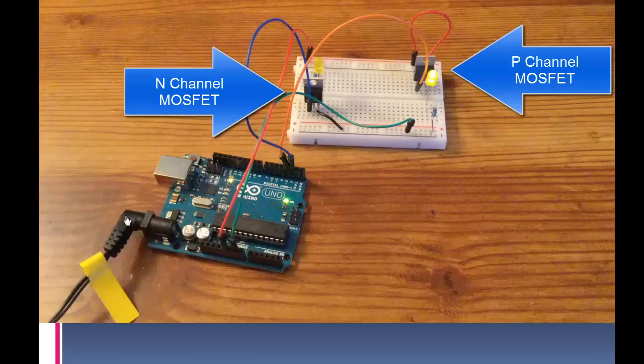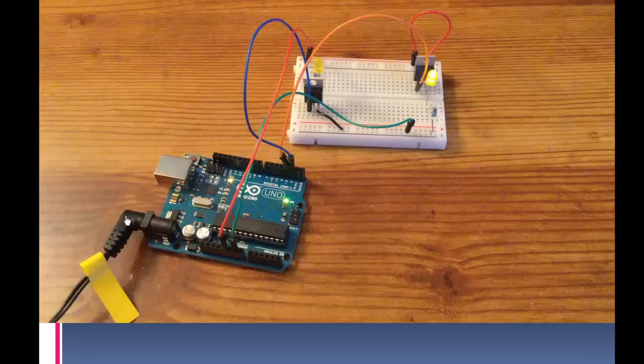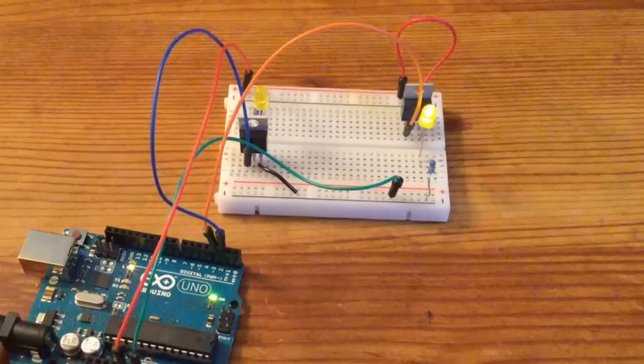On the left I have the N-channel. On the right I have the P-channel. You can sort of tell that if you look at the setup because I have the power going to the top of the board and the ground going to the bottom. We can see the LED is above the N-channel and it's below the P-channel.